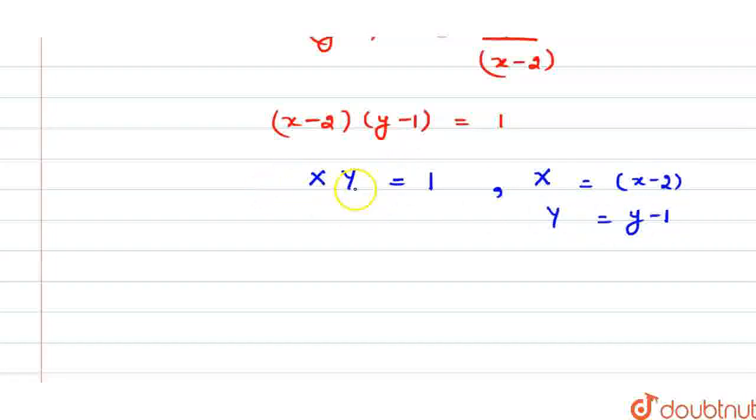So this is the form of the rectangular hyperbola, which has center at (2,1). So, let us draw the graph of this.